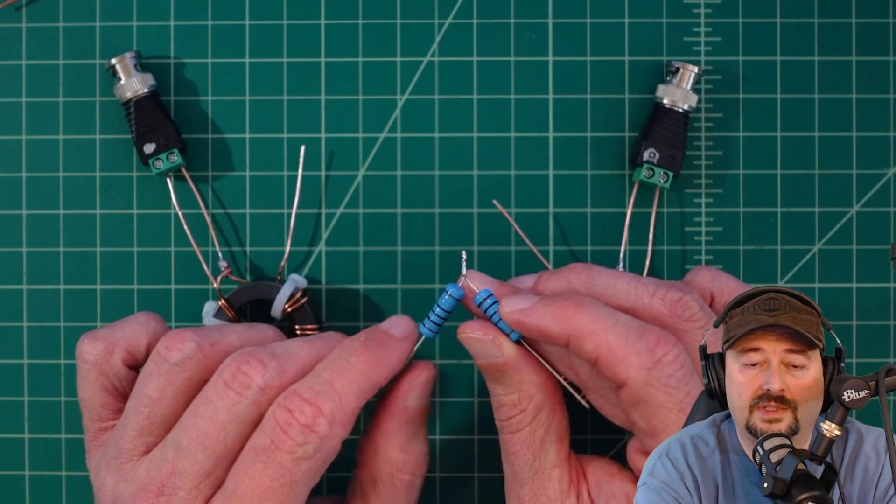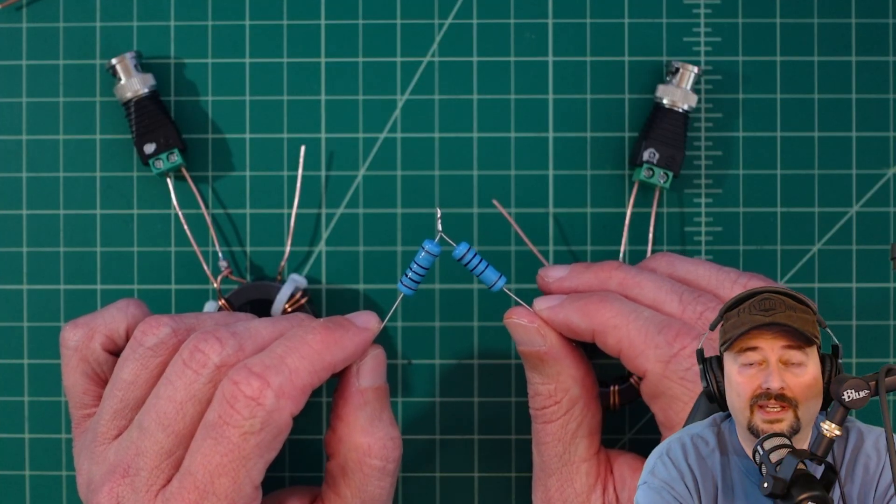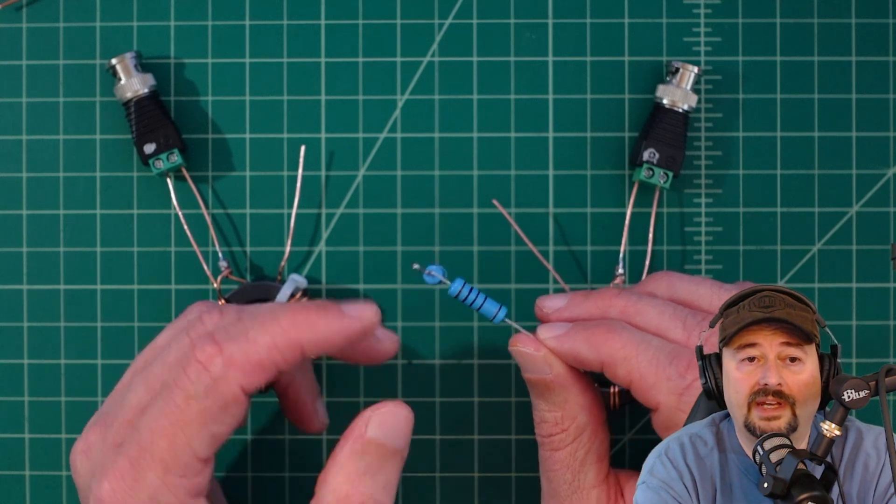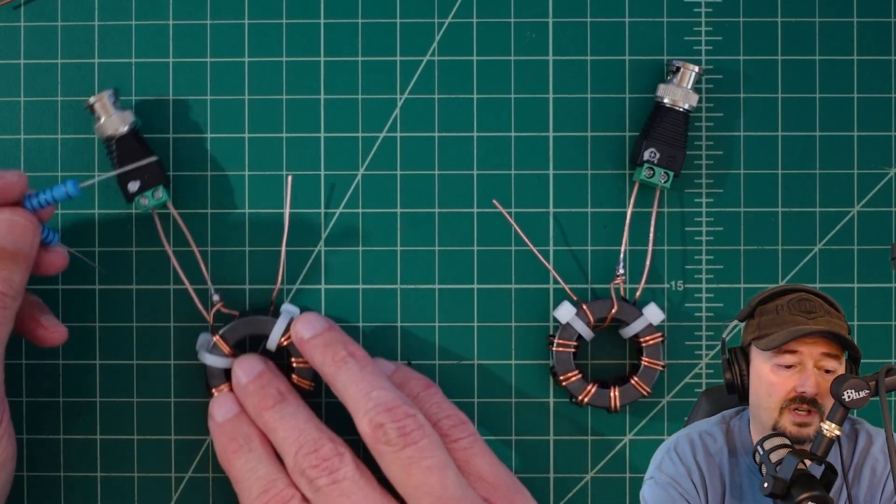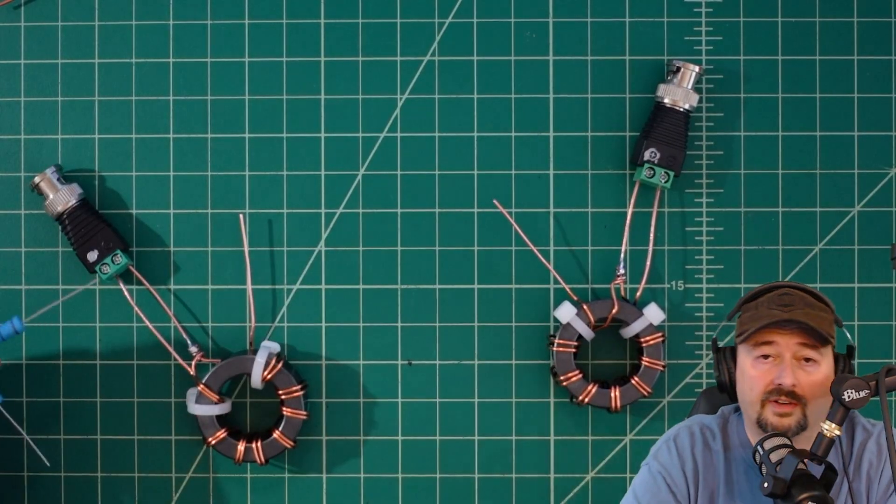I've connected them in series which gives us right around a 200 ohm load. In reality it's around 199.2. We're going to connect this across the wires coming off of our cores.